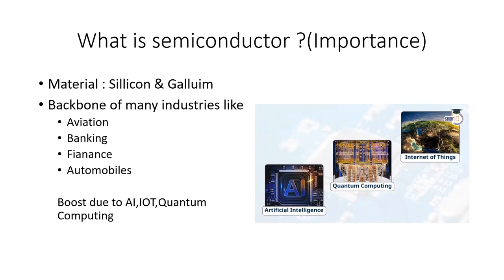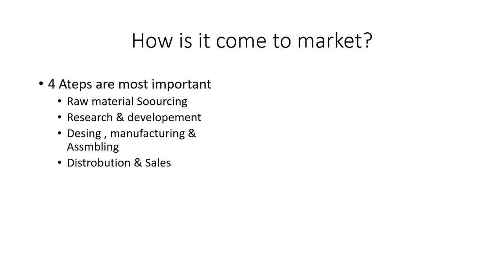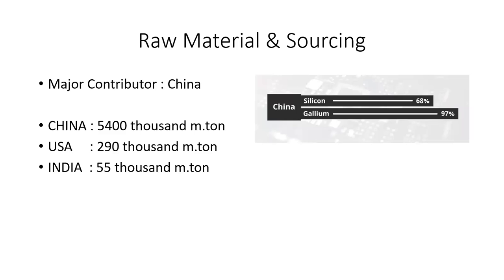How does a semiconductor chip come to market? There are four most important steps: raw material sourcing, research and development, design, manufacturing, and assembling and distribution in sales. We will touch upon all these points thoroughly in the next slides.